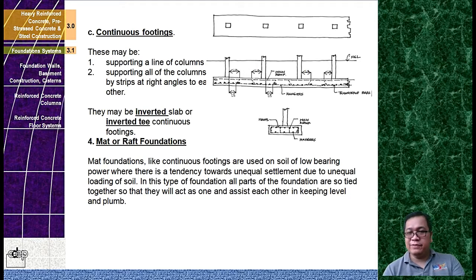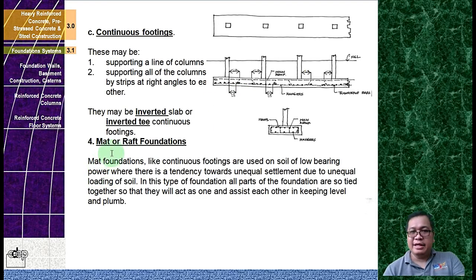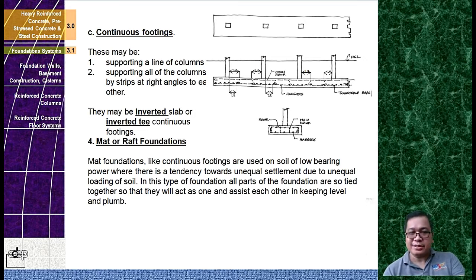Then you have continuous footings, which may support a line of columns or all of the columns by strips at right angles to each other. They may be inverted slab or inverted key continuous footings. You also have mat or raft foundations. Mat foundations, like continuous footings, are used on soil of low bearing power where there is a tendency towards unequal settlement due to unequal loading of soil. All parts of the foundation are tied together so they will act as one.